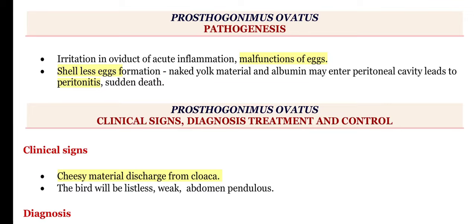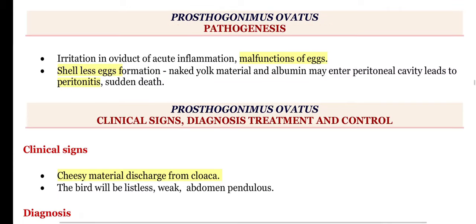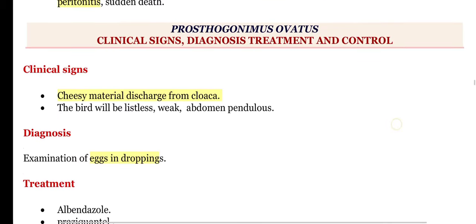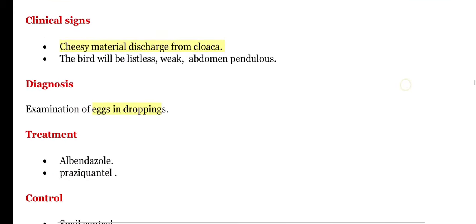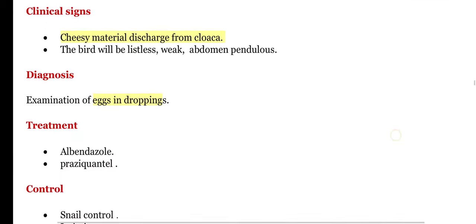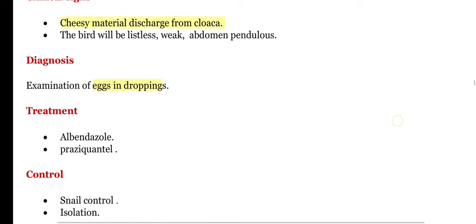If diffuse peritonitis is present, sudden death of the bird will be noticed. This peritonitis is due to the microbial contamination of the yolk and albumin. Clinical signs such as cheesy material discharge from the cloaca will also be noticed.